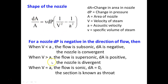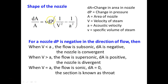When V is less than A (subsonic flow), one over V-squared minus one over A-squared is positive. Since dP is negative, dA/A is negative — meaning area is decreasing. This is a convergent nozzle. When V is greater than A (supersonic flow), one over V-squared minus one over A-squared becomes negative. Since dP is negative, dA/A is positive — area is increasing. This is a divergent nozzle.